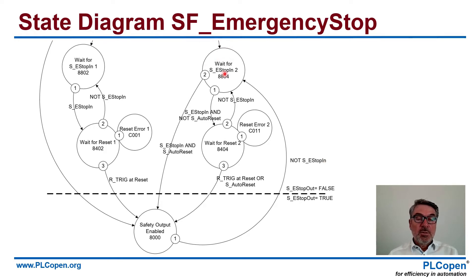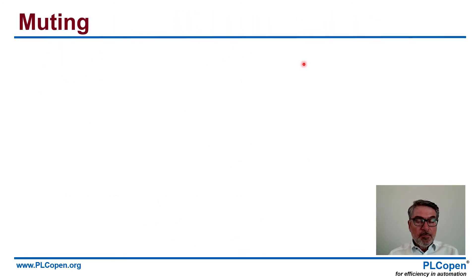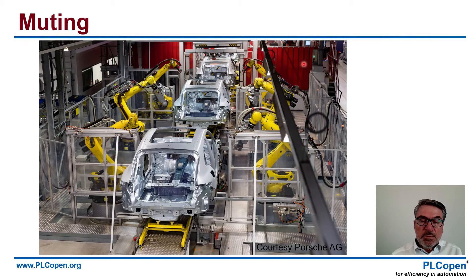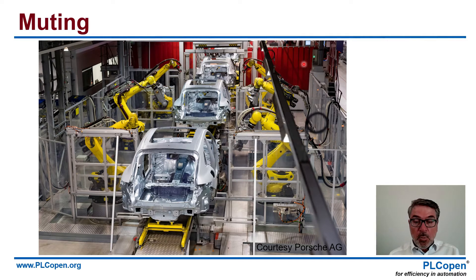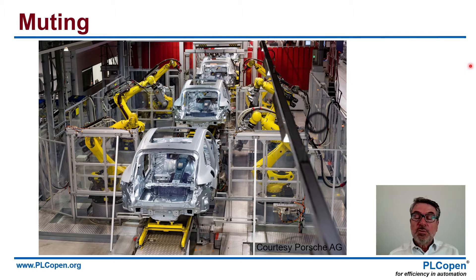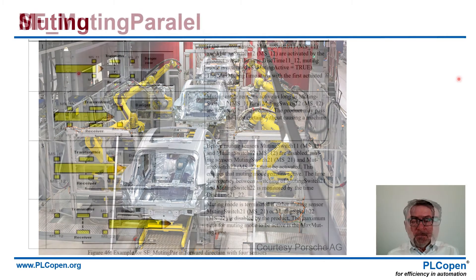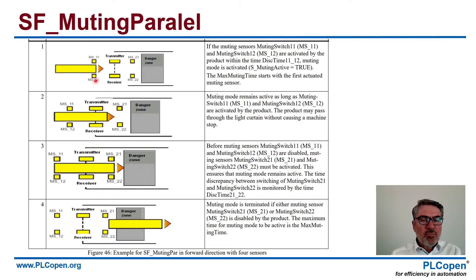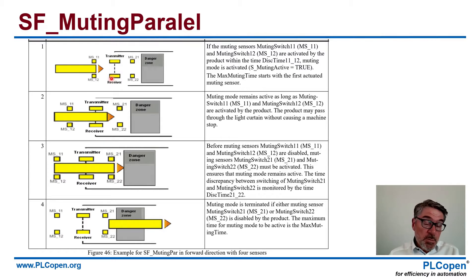The next example is on muting. With muting, we suppress the safety functionality. Think about moving a car body into the production line — we only want to move the car body safely in. And if somebody is walking behind it, then everything should stop and move to the safe state.